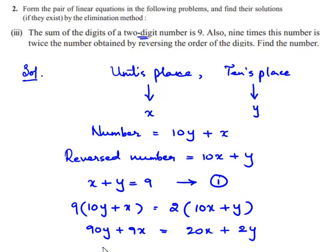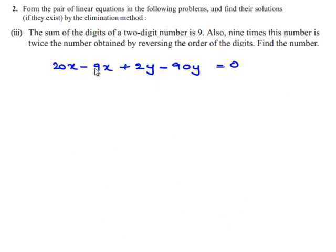we get 20x minus 9x plus 2y minus 90y is equal to 0. 20x minus 9x is 11x, 2y minus 90y is minus 88y is equal to 0.